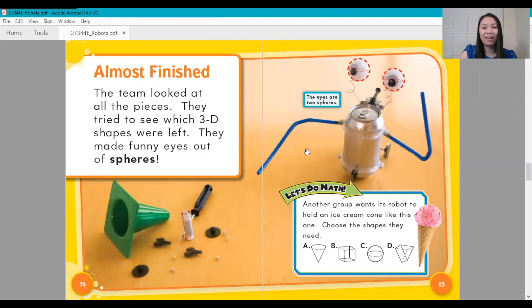Let's do some more math. Another group wants this robot to hold an ice cream cone like this one. Choose the shapes they need. Did you guess A, a cone, and C, a sphere? You are correct. Good job.